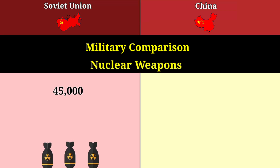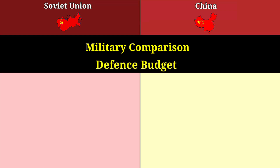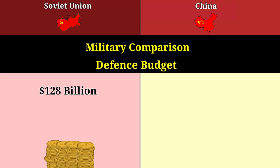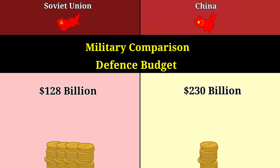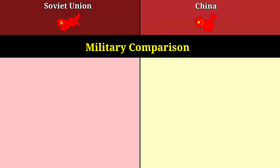Nuclear weapons: 45,350 for the Soviet Union, 35 for China. Defense budget: 128 billion dollars for the Soviet Union, 230 billion dollars for China.